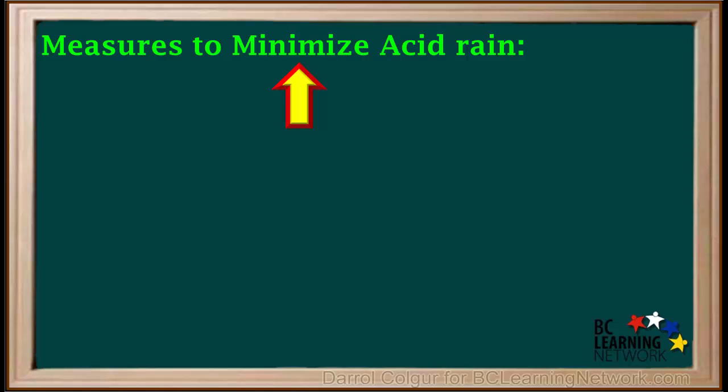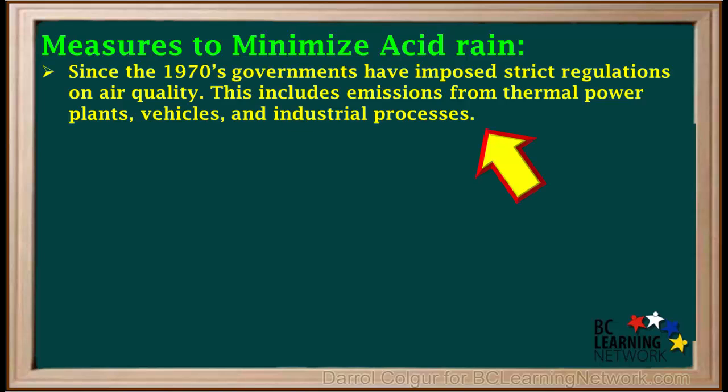Acid rain is not as big a problem as it once was in many places. This is due to increased awareness of the problem and pressure on governments to react. Beginning in the 1970s, many governments have imposed strict regulations concerning air quality. This includes emissions from thermal power plants, vehicles, and industrial processes.